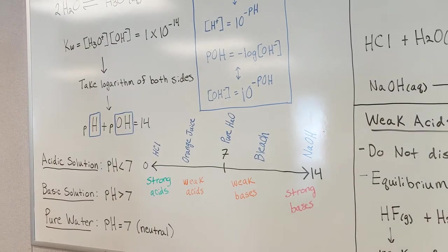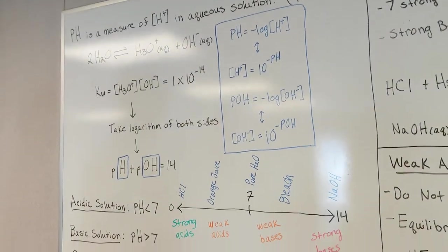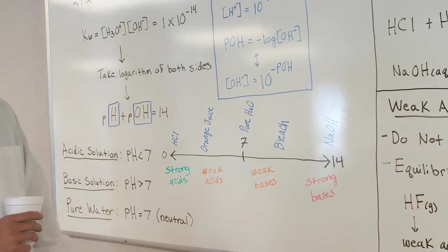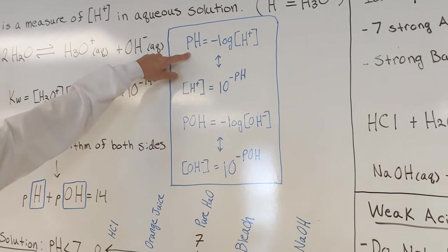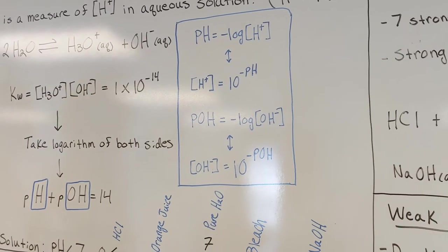So, that's just kind of a rundown of basic acid-based chemistry and the scale, the pH scale. These are important equations here that we're going to be manipulating. We got pH is equal to the negative log of our H-plus concentration.